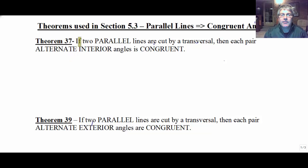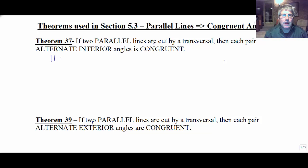Theorem 37 — we're not going to worry about theorem numbers, but this is the one from this book. It says if two parallel lines are cut by a transversal, then each pair of alternate interior angles is congruent. This is the converse of what we had before. We knew that if alternate interior angles were congruent, the lines were parallel. Now the converse is true: parallel lines imply that the alternate interior angles are congruent.